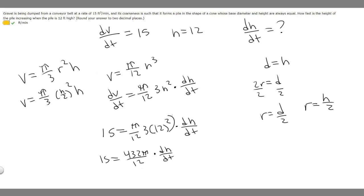Now we can multiply both sides by 12 and then divide by 432π to get dh/dt. We multiply both sides by 12, so this 12 will go away. We'll have 12 times 15, which is 180. So we have 180 = 432π times dh/dt. If we divide by 432π, we're going to get our answer.